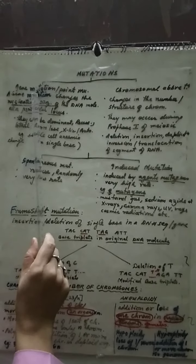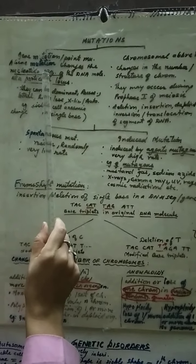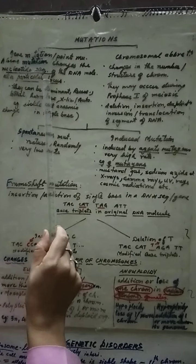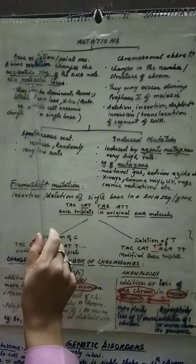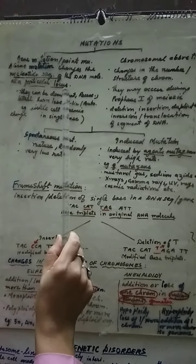The first is gene mutation and chromosomal mutation. What are gene mutations? Why are they called point mutation also? Because a gene mutation changes the nucleotide sequence of the DNA molecule. Here we can say of a particular locus on the chromosome.